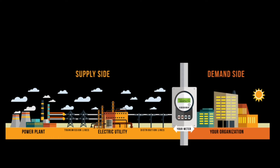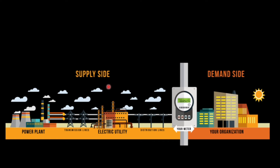Let us first understand what is the supply-side and what is the demand-side. The supply-side includes power plants, transmission lines, electric utilities, and distribution lines. We need to manage all these components of the supply-side very well — that is what comprises supply-side management.